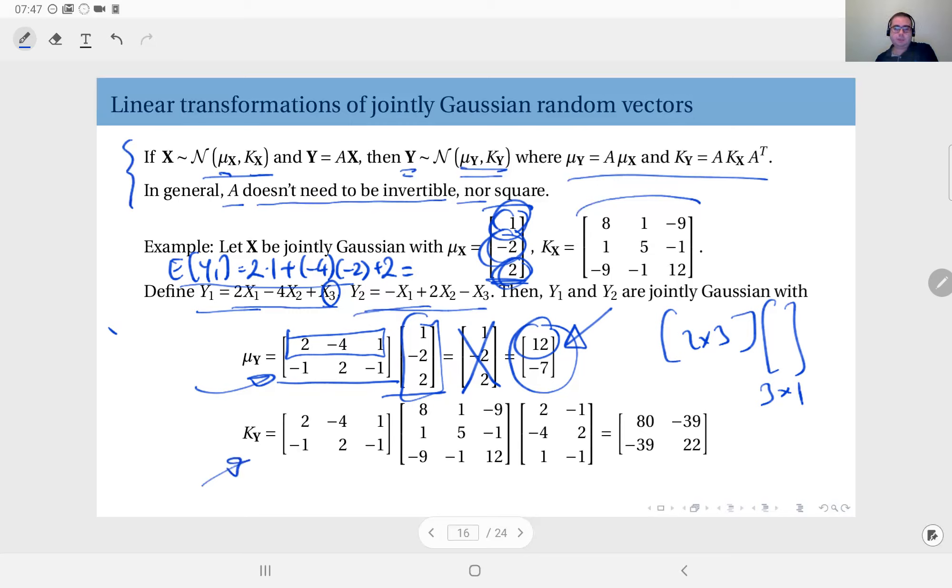Next thing, we will just find the covariance matrix, which will give us everything we need for the distribution of Y. This is the transformation matrix, this is its transpose, and here I have the given covariance matrix of X. Multiply these—this is a two by three, this is three by three, and this is three by two. When you multiply them all together, the result will be two by two matrix.